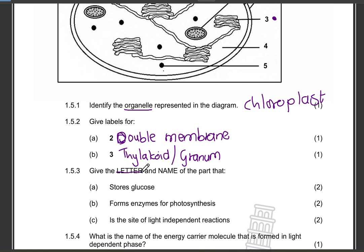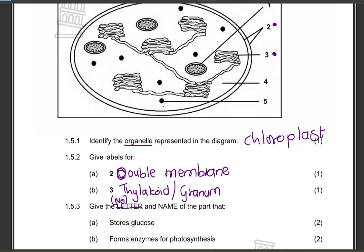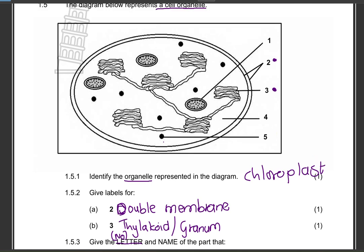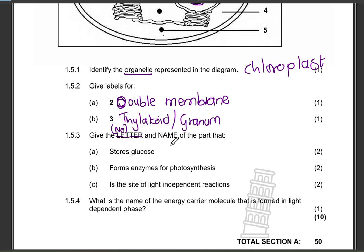Next question: give the number and the name of the part that stores glucose. Remember, glucose is stored in the starch grain. This is two marks — the number is one, and the name is starch grain.